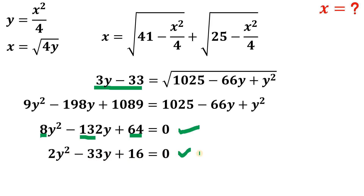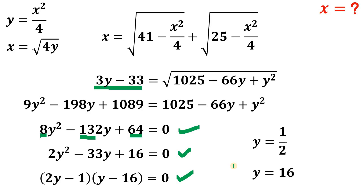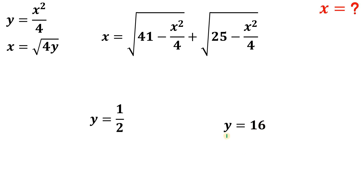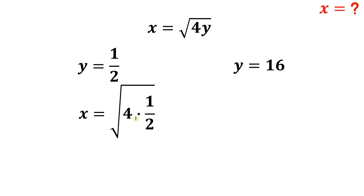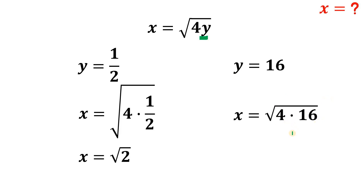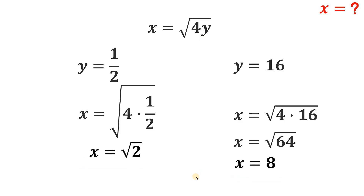This quadratic equation is not hard to factor. Factoring gives us (2y minus 1)(y minus 16) equals 0. Applying the zero product property, y equals 1/2 or y equals 16. We found two possible values for y, but we need the value of x, where x equals the square root of 4y. Replacing y with 1/2: x equals the square root of 2. Replacing y with 16: x equals the square root of 64, which is 8. Therefore x equals square root of 2 or x equals 8.